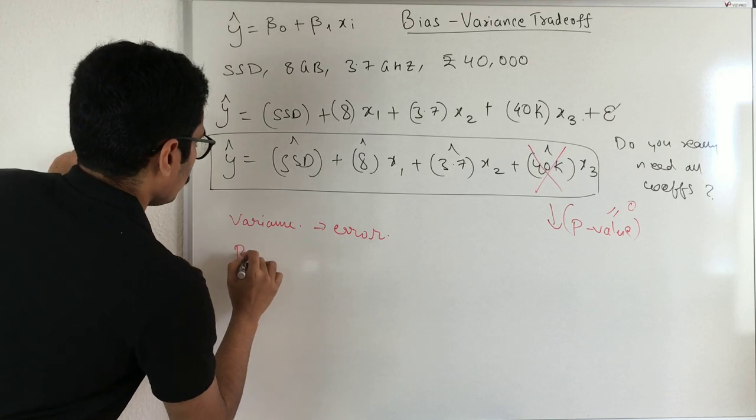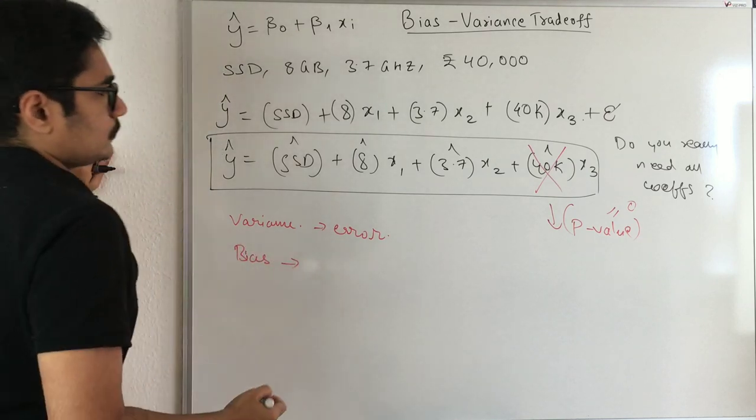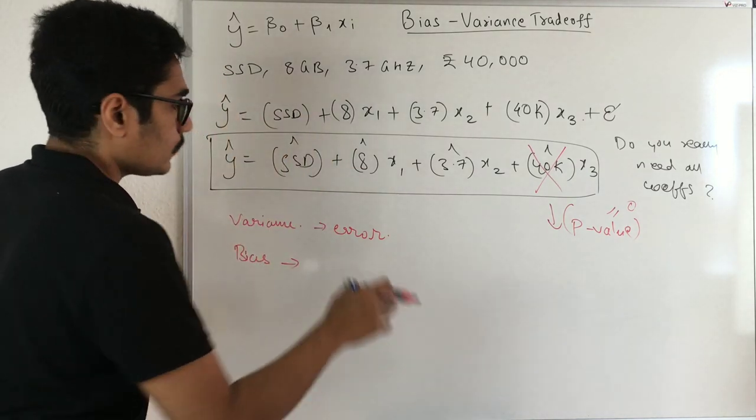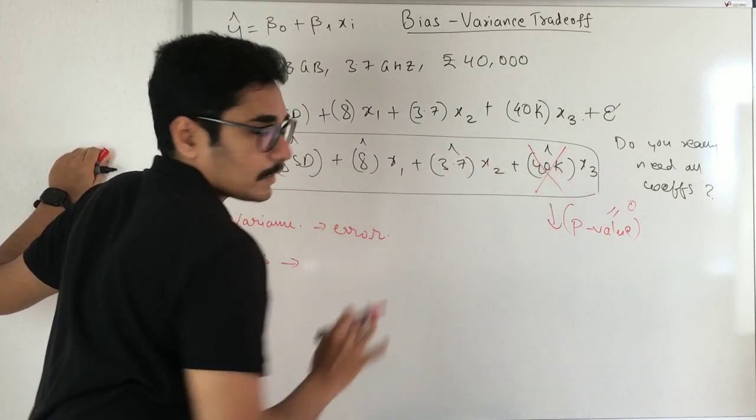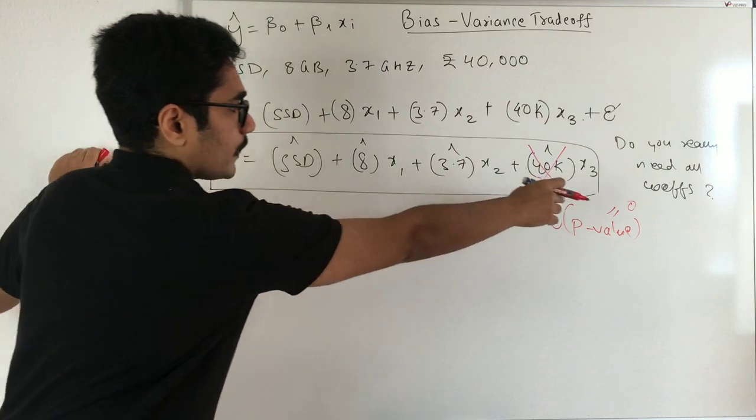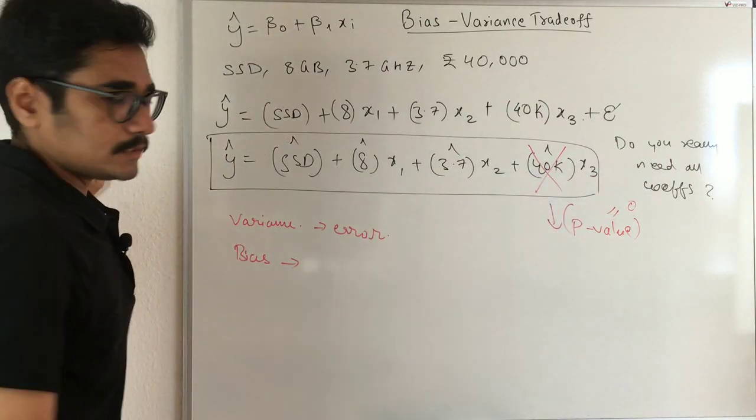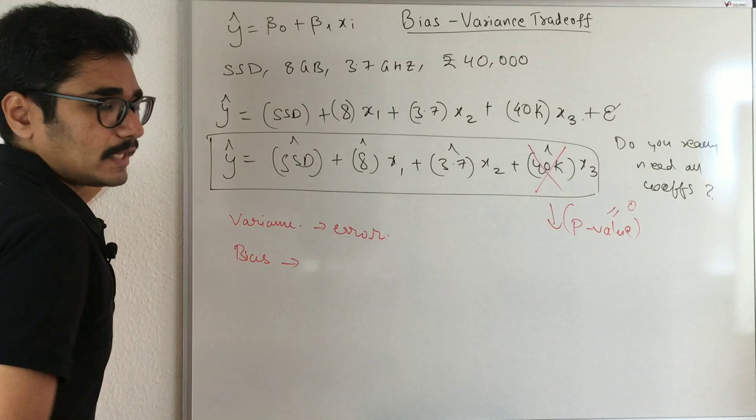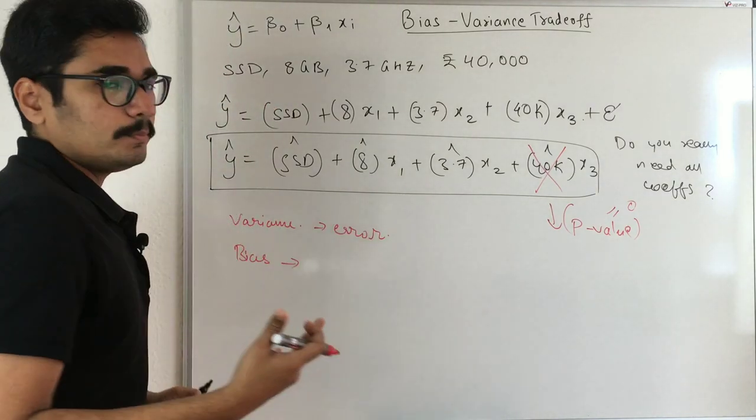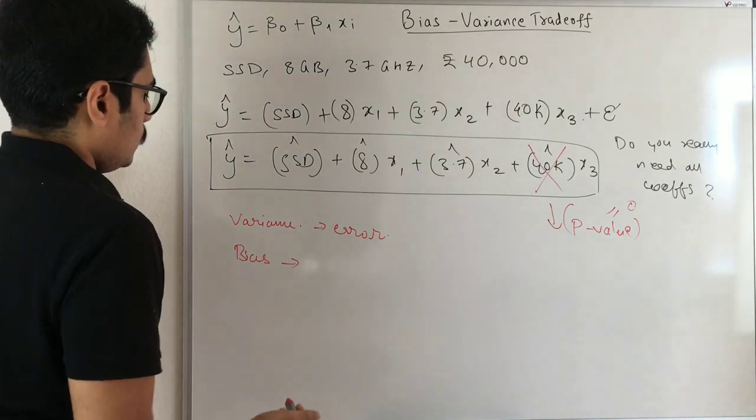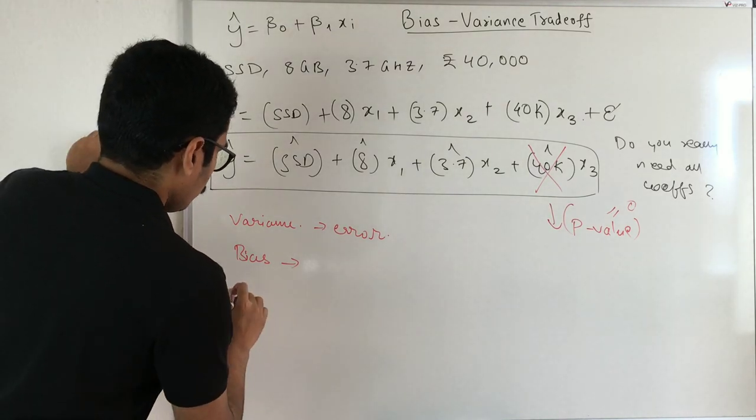And you have bias. Bias means you initially thought you will predict with all four parameters, but you are at the end compromising on one parameter. That is nothing but your bias.